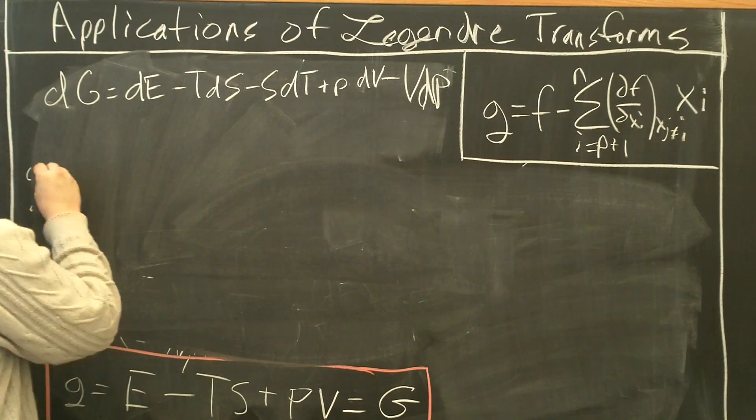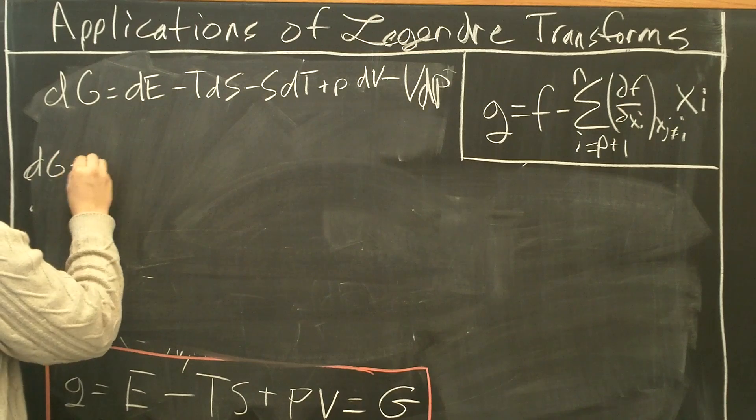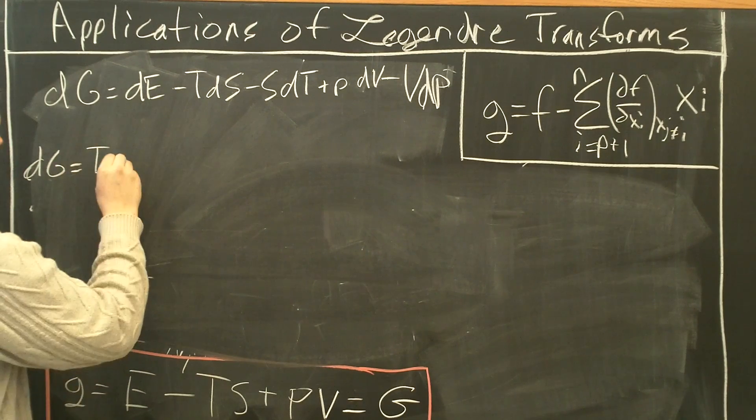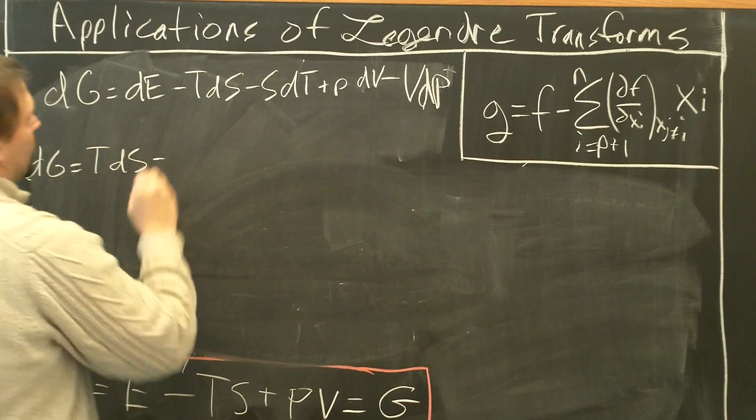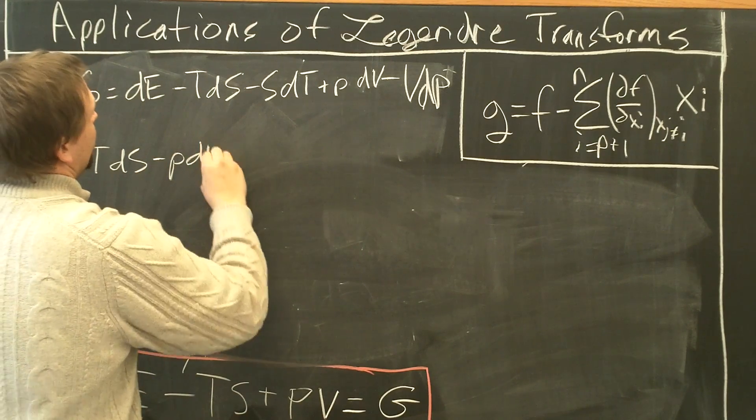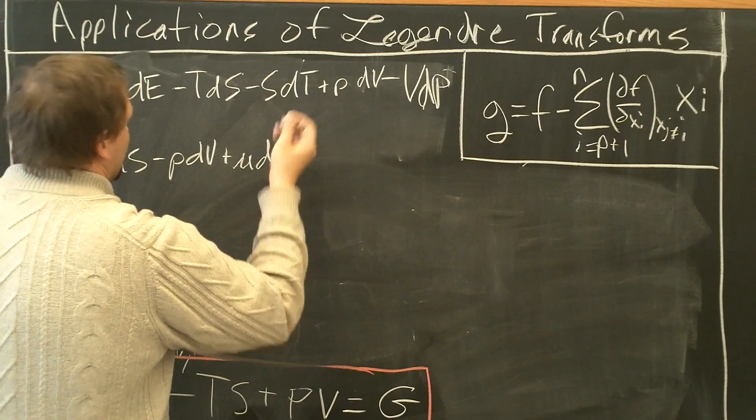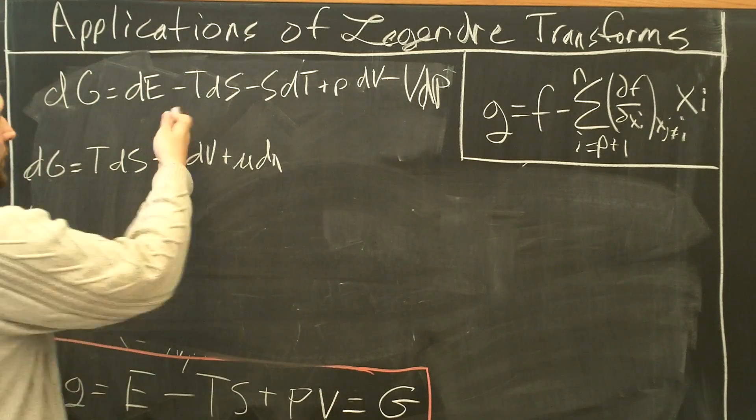So now let's substitute in for dE again. dG. What is dE? Equals T dS minus P dV plus μ dN, or dN for one component. And then all this stuff.